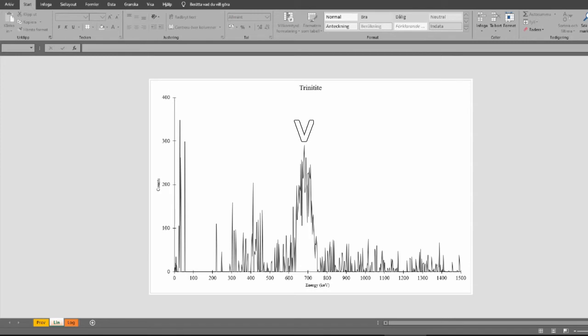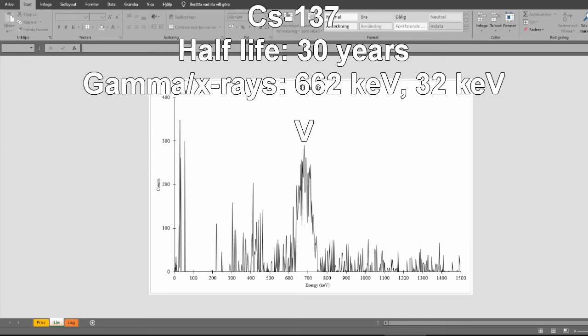This one at about 650 to 700 keV is likely from cesium-137. And so is this one at around 30 keV. Cesium-137 is a fission product, so it is probably from the atomic bomb.